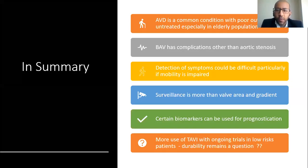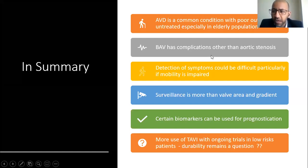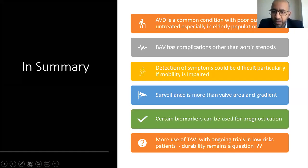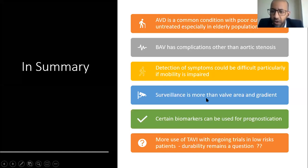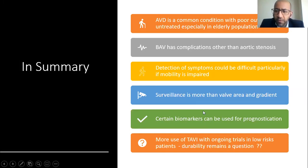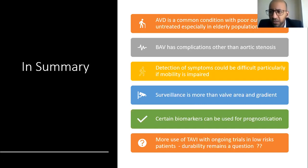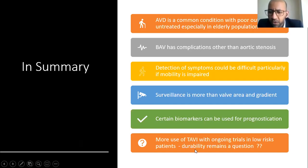In summary: aortic valve disease is common with poor outcomes if untreated, especially in the elderly. Bicuspid aortic valve has complications beyond aortic stenosis that must be sought on echocardiography. Detection of symptoms can be difficult in patients with impaired mobility. Surveillance involves much more than valve area and gradient alone — biomarkers such as BNP and newer imaging modalities to assess early decompensation are increasingly important. TAVI has ongoing trials in low-risk patients, but long-term durability remains questionable.